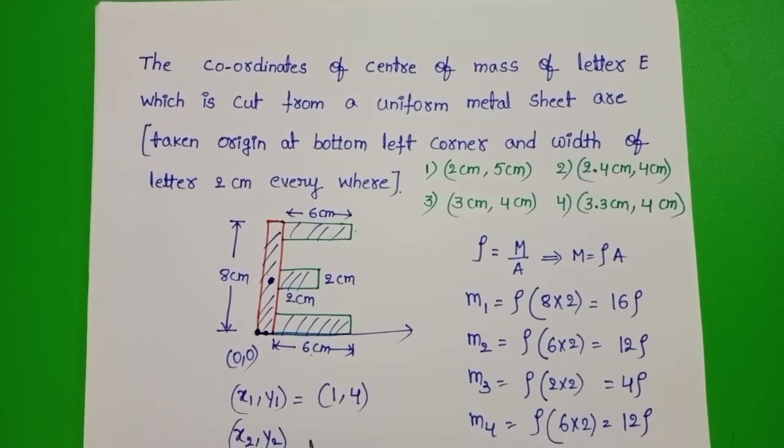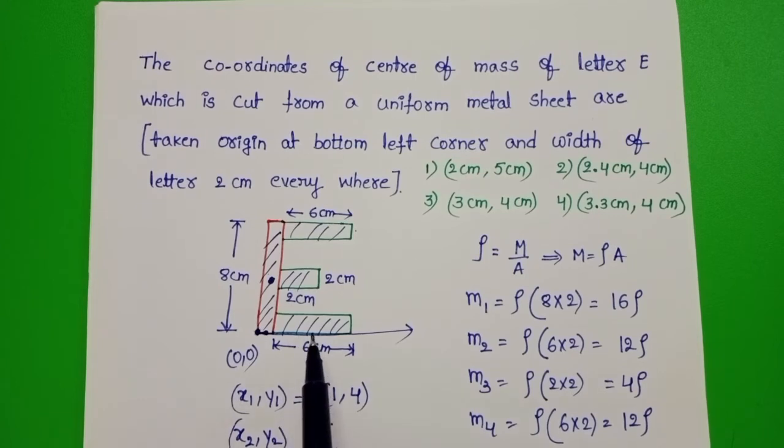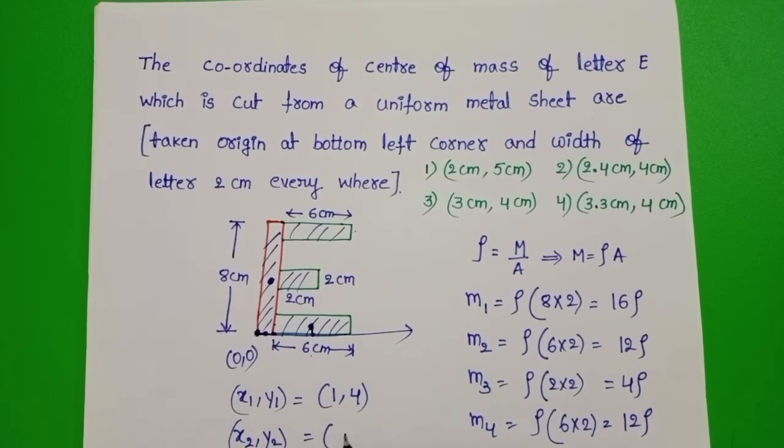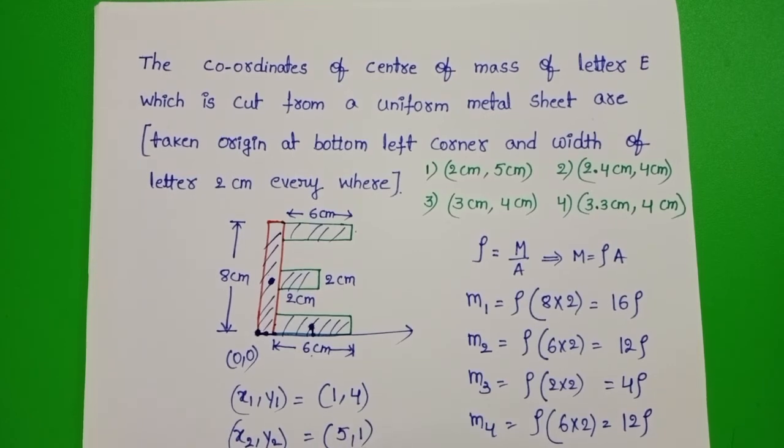x2, y2 - Position of center of mass of the second part. This length is 6 cm. This is the position of center of mass. So, 3 cm from here. But from origin, 2 plus 3 is 5 cm. And y equals 1 cm. So 5, 1.